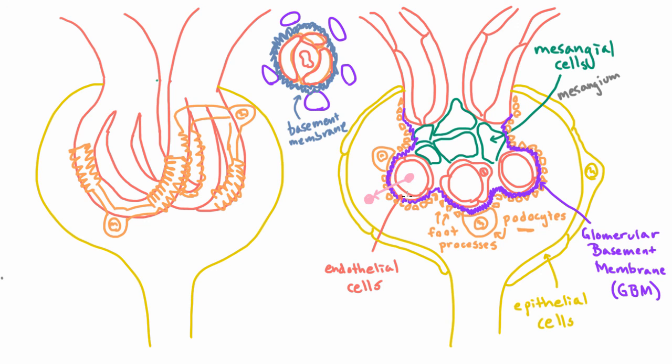First, it needs to get through the endothelial cell. Then it needs to get through the GBM, as we call it. And then it needs to get through the foot processes of the podocytes.